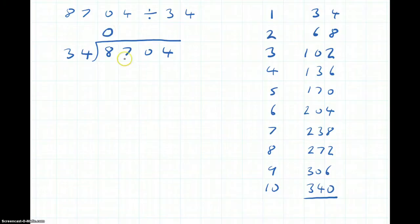Does 34 go into 87? We look across the times table. We see here twice is 68. Three times is 102. So it goes twice. So put down twice.